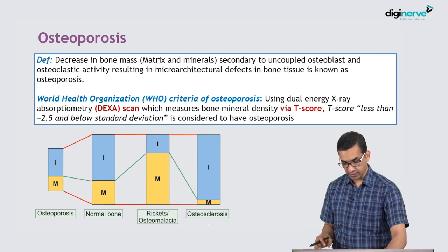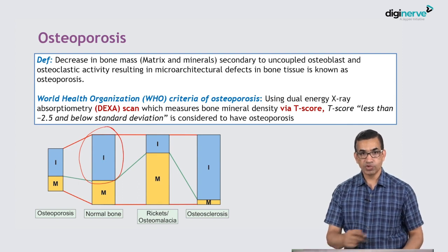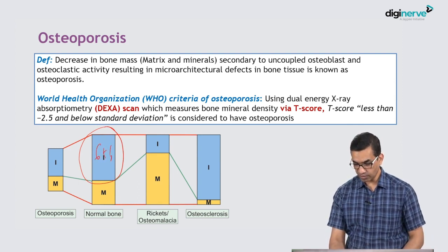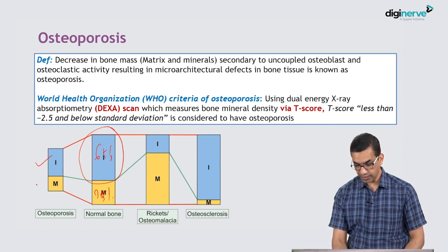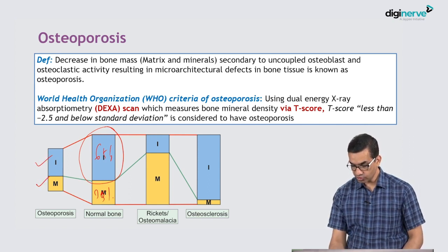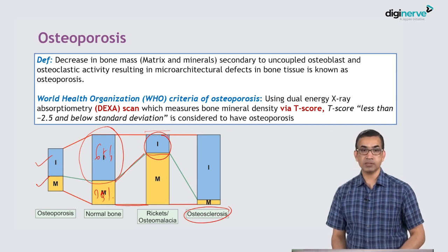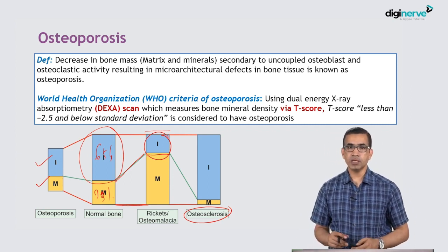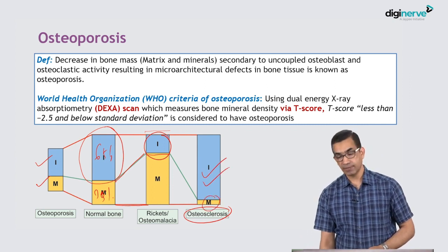If you see this figure, this is a normal bone with roughly 65% minerals and about 30 to 35% matrix. In osteoporosis, the whole thing is shrunken — lesser inorganic material and lesser matrix. In rickets and osteomalacia, overall bone mass is fine but in a particular area the matrix is more and the inorganic component is less. Whereas in osteosclerotic disorders like Paget's and osteopetrosis, the inorganic component is too much and the matrix component is relatively less.